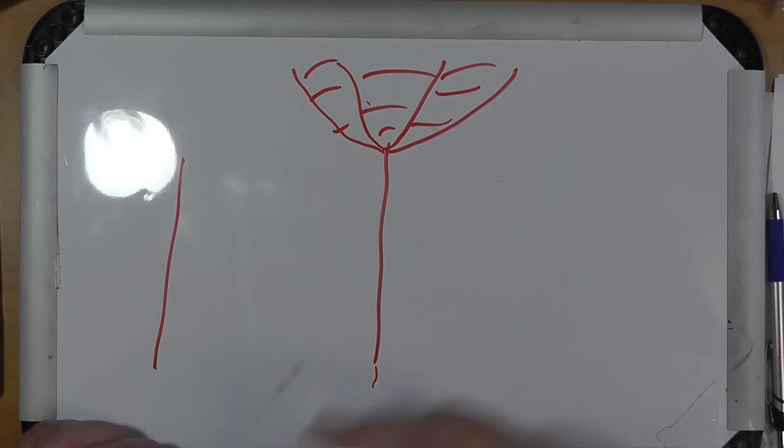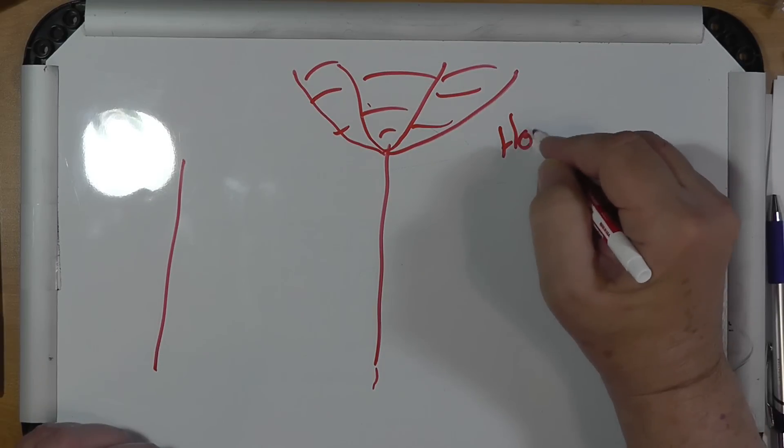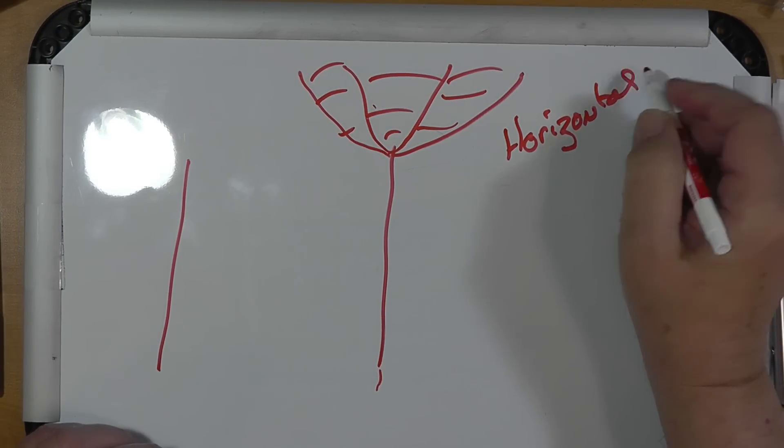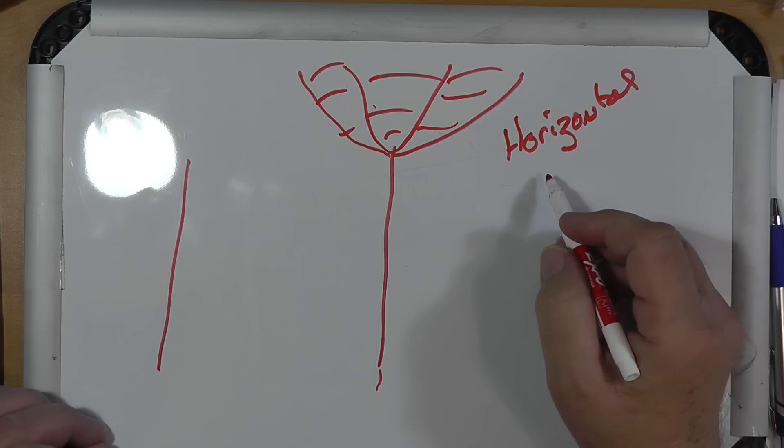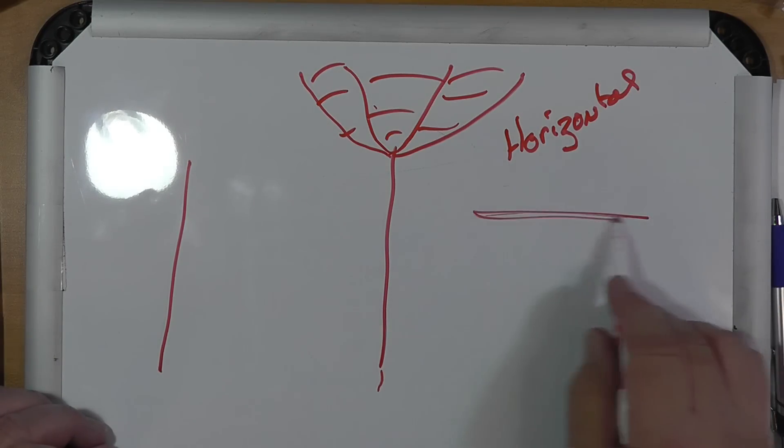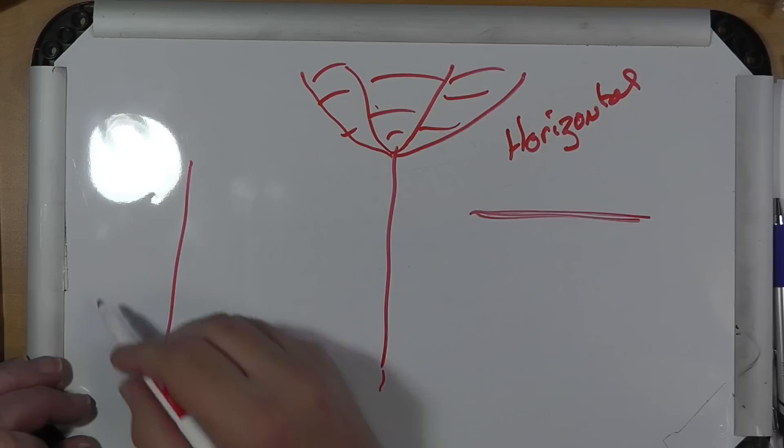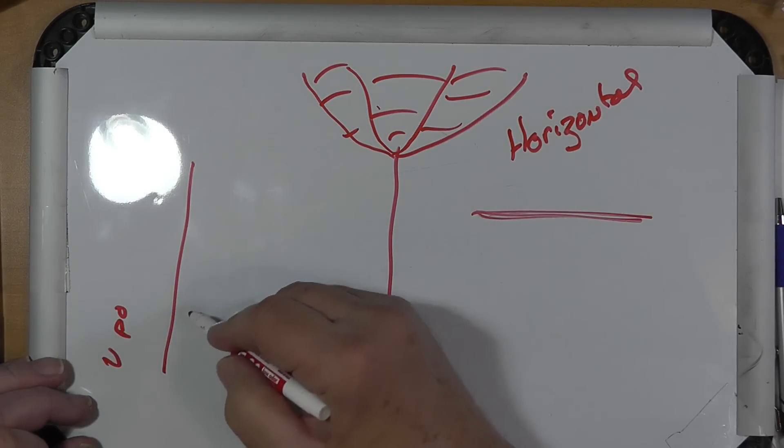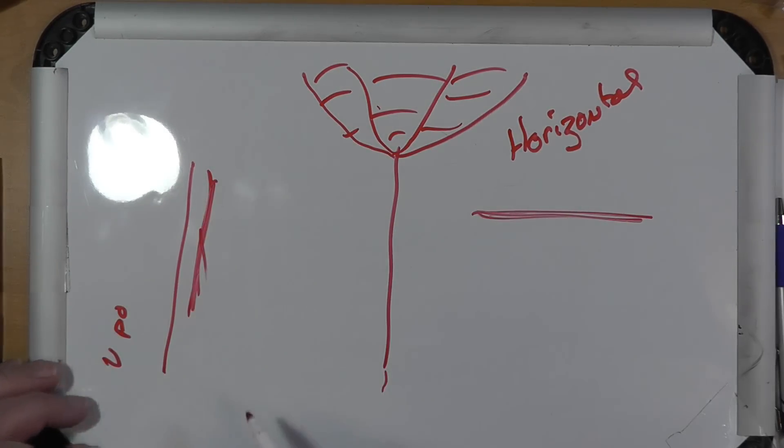Now, the hex beam is horizontal polarization. The plane waves are parallel to the ground. The vertical has vertical polarization, so the waves are parallel to the antenna. In theory, these two are kind of orthogonal to each other.